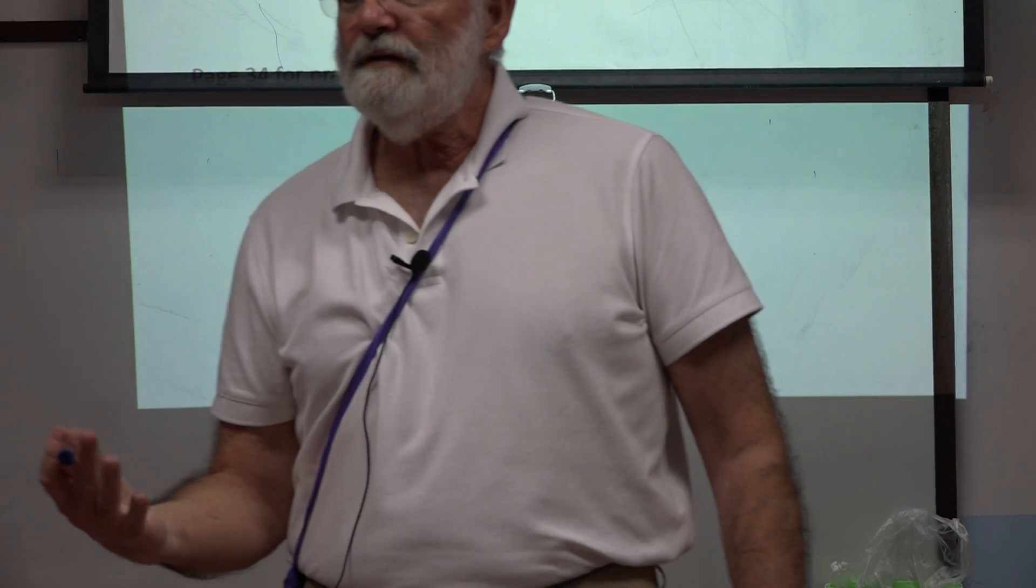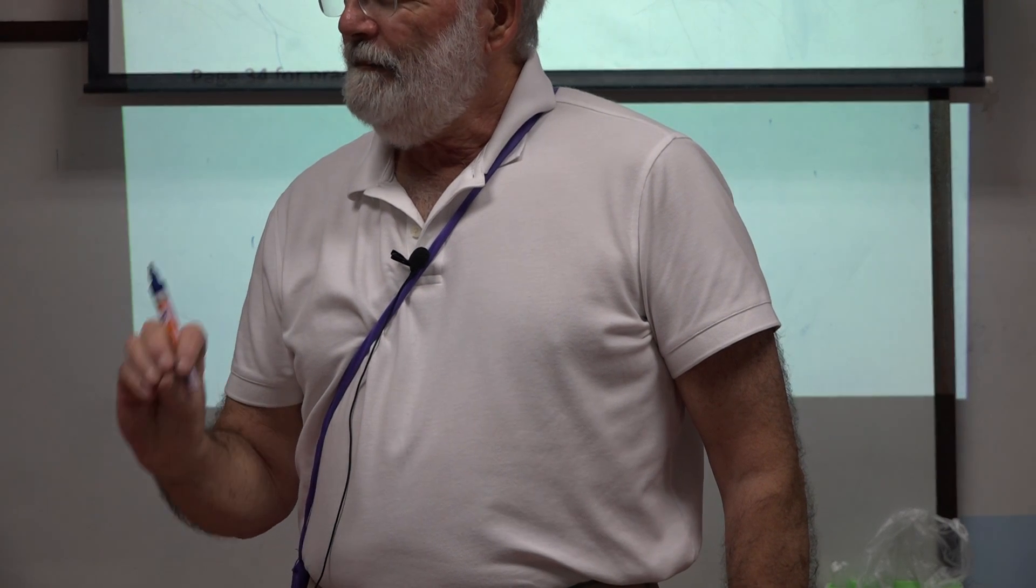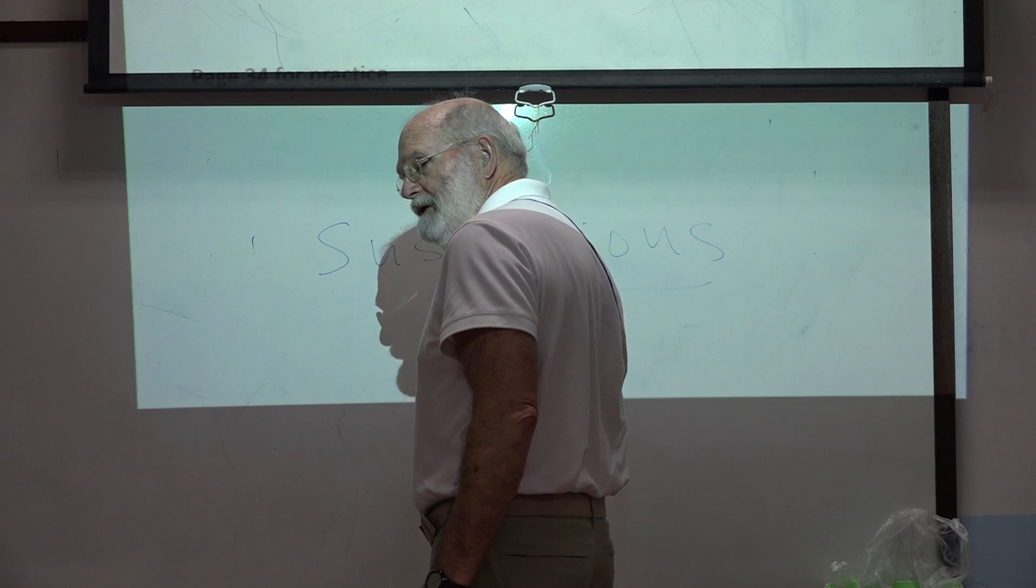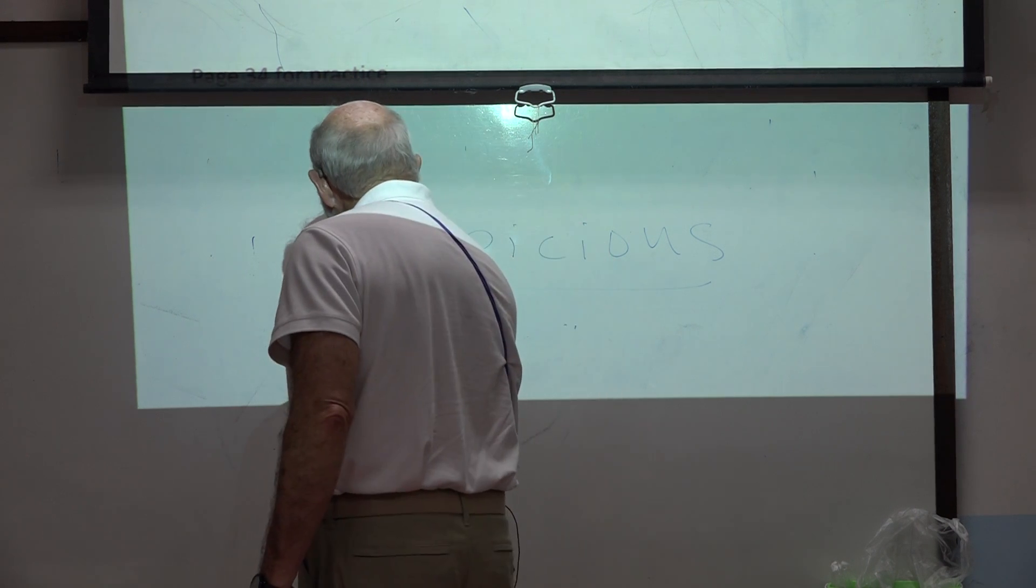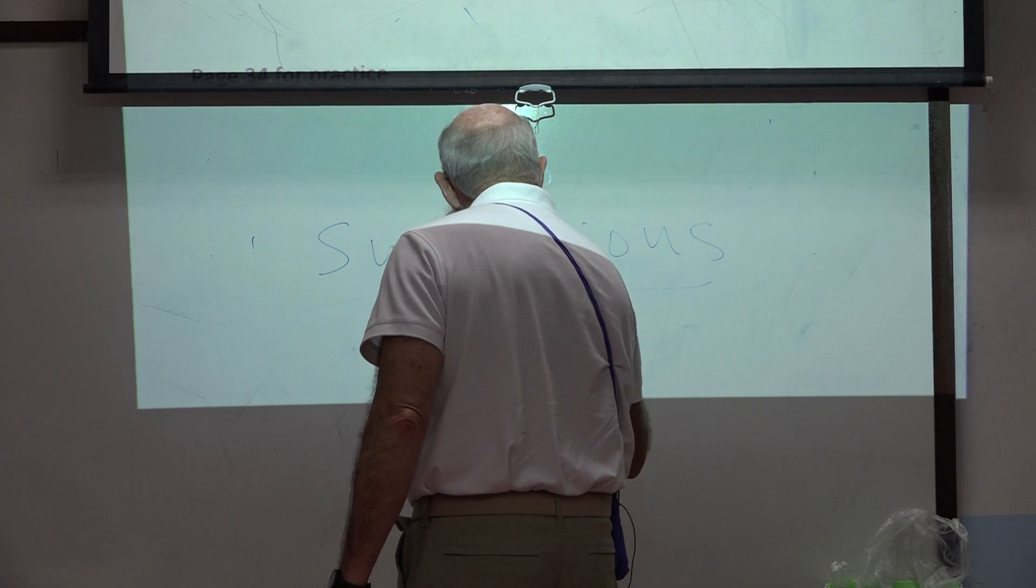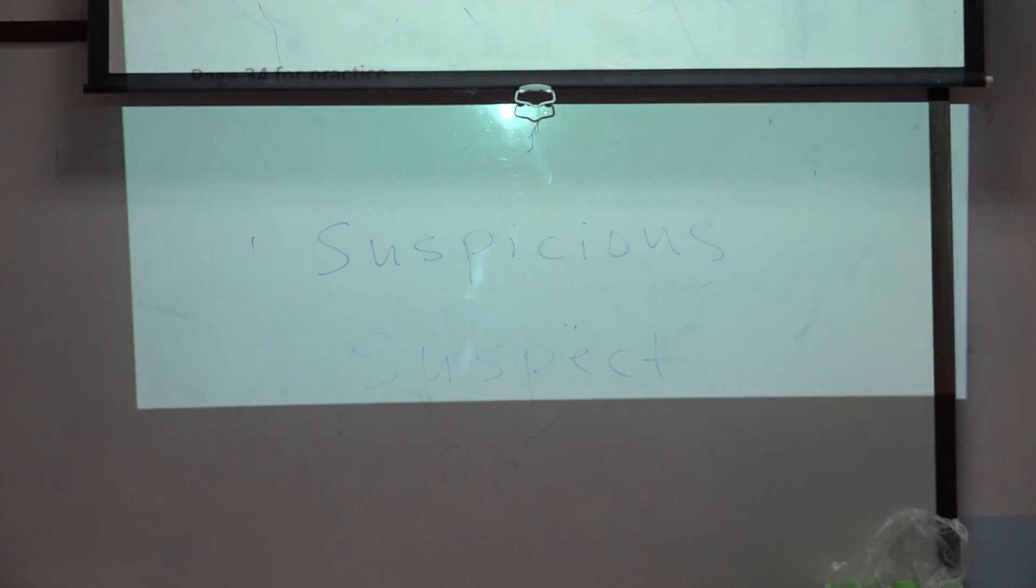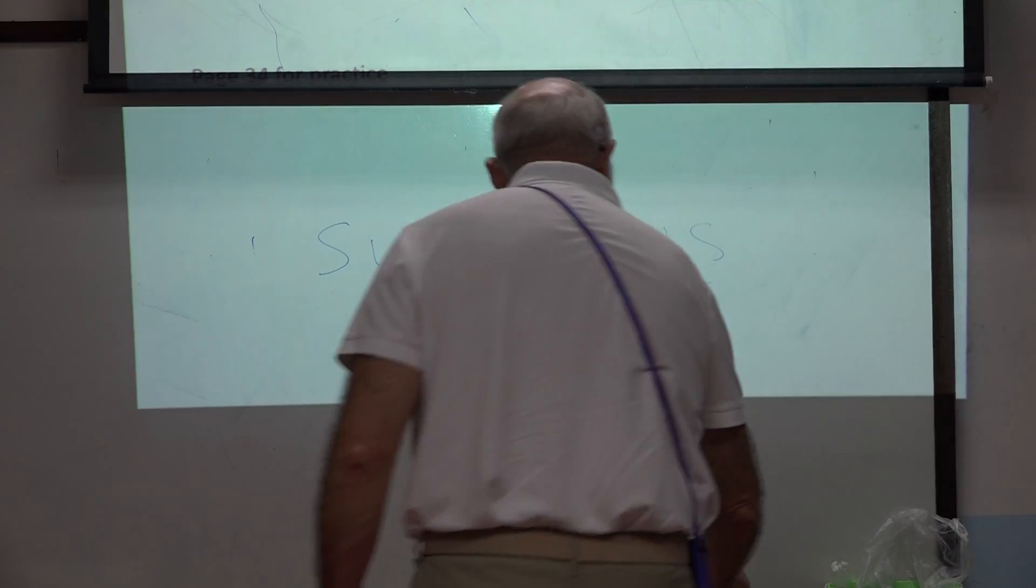When we are suspicious, we think something bad is going to happen, or could happen. The verb, this is an adjective, the verb is suspect. I suspect something bad is going to happen. Or, I am suspicious that something bad is going to happen. It could be used either as a verb or as a noun.